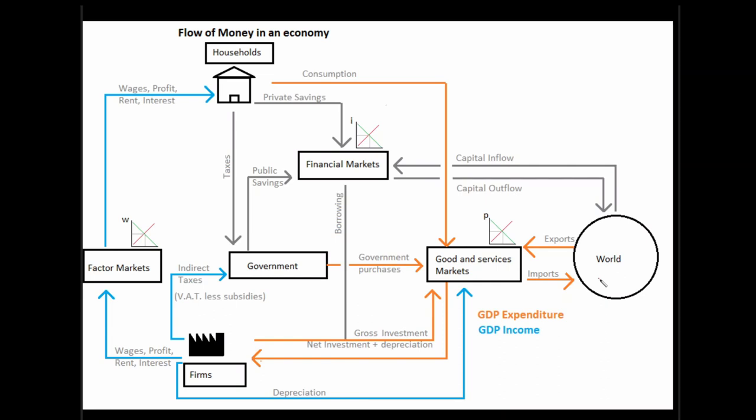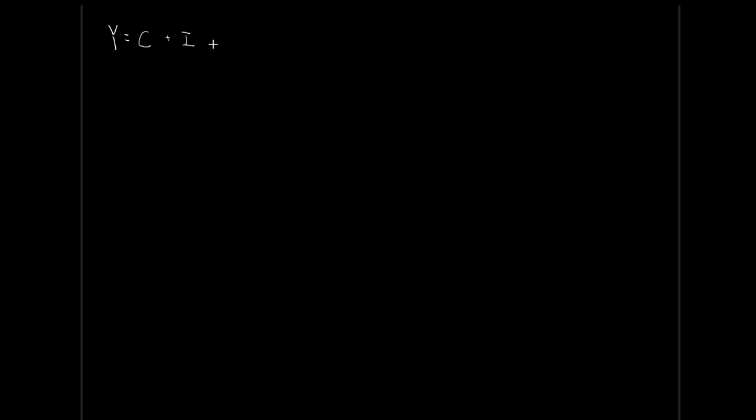We want to take a look at this expenditure side and measure GDP through that approach. Some big assumptions with this model. We're focusing in strictly on our expenditure side of GDP. So GDP — Y, income, output — is equal to consumption plus investment plus government expenditures plus our net exports. We're going to be making some assumptions about these different variables: what influences our consumption, our investment, government expenditure, and so on. And through that, we can expand and collapse this down to something nice.